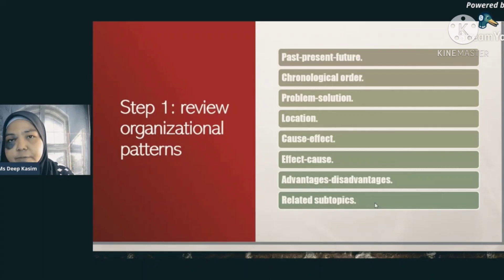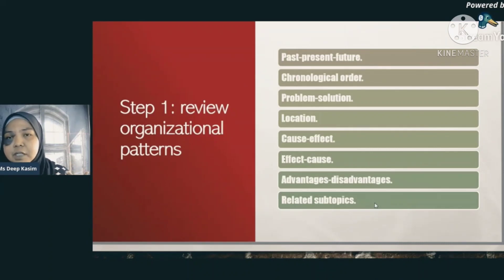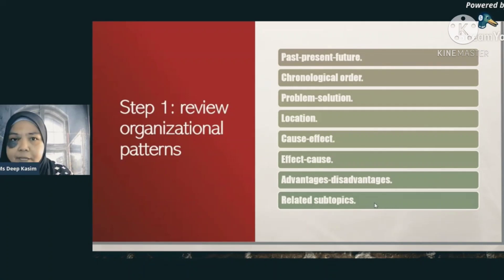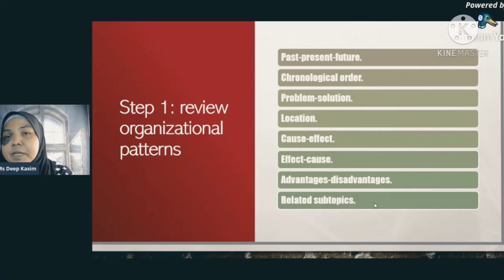Next is the problem-solution pattern. You might talk about the problem in your introduction, and then in the body you present the solutions: solution one, solution two, solution three. You still need to do some sort of outline — a simple mind map where the problem is in the center and the solutions branch out. Depending on the time given, if you have only two or three minutes, two solutions are enough. For your impromptu speech, we're looking for just two main points.